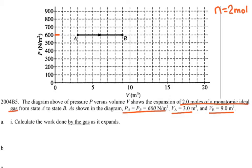This is the 2004 AP Physics B exam problem. The diagram of pressure P versus volume shows the expansion of 2 moles of monatomic ideal gas — make sure you review what ideal gas criteria are before the AP exam — from state A to state B. PA equals PB equals 600 Newtons per meter squared (Pascals). The volume of A is 3 cubic meters and the volume of B is 9 cubic meters.